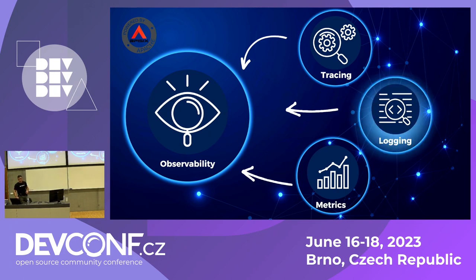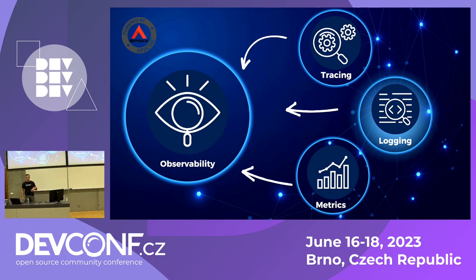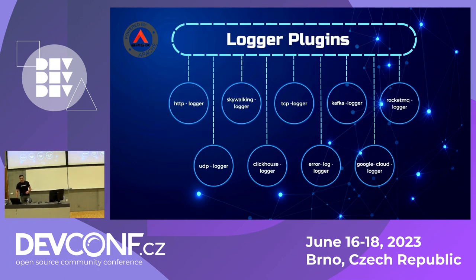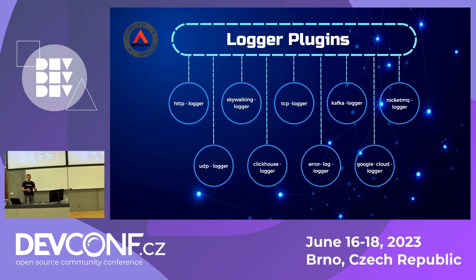We start with logging — it's the most trivial and easy to instrument. Everyone uses logs for debugging, auditing, or real-time understanding of events by timestamp. Logger plugins — like HTTP logger — let you send request data from the API gateway to your log server automatically, without implementing any logic in your application. You can also use TCP logger or other loggers as needed.